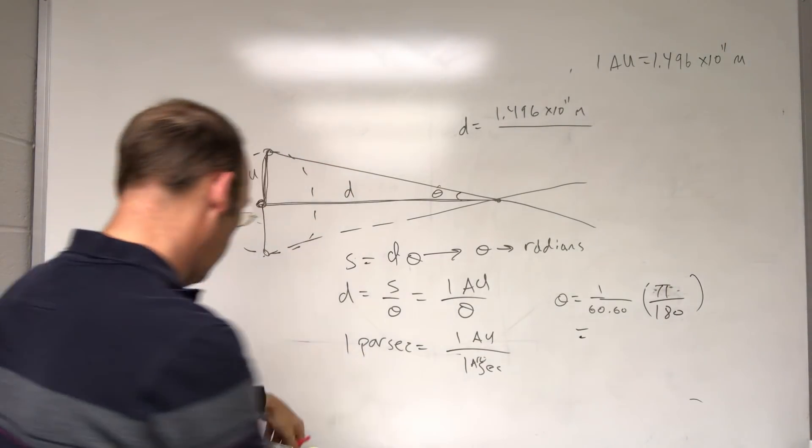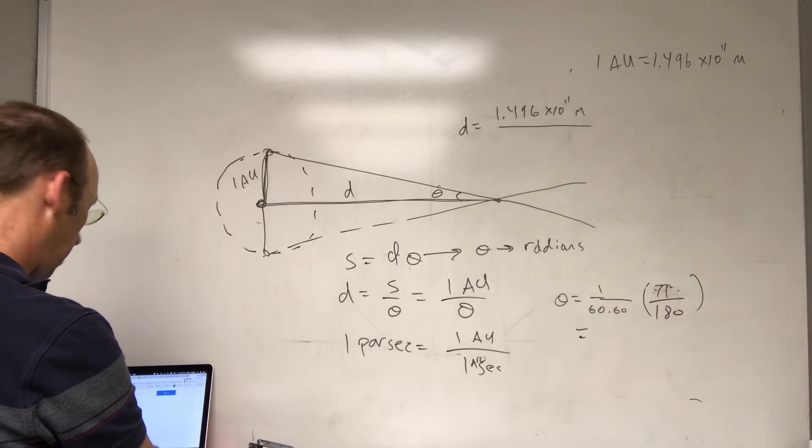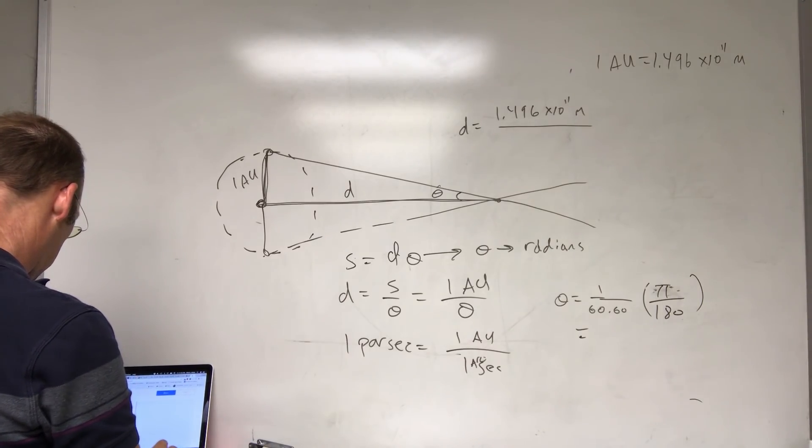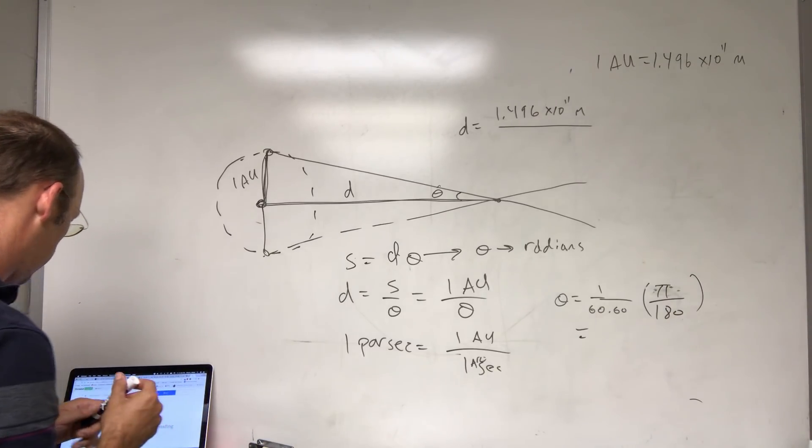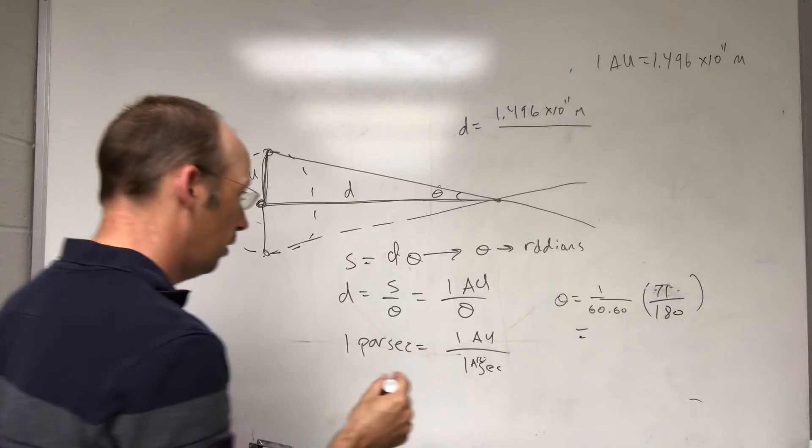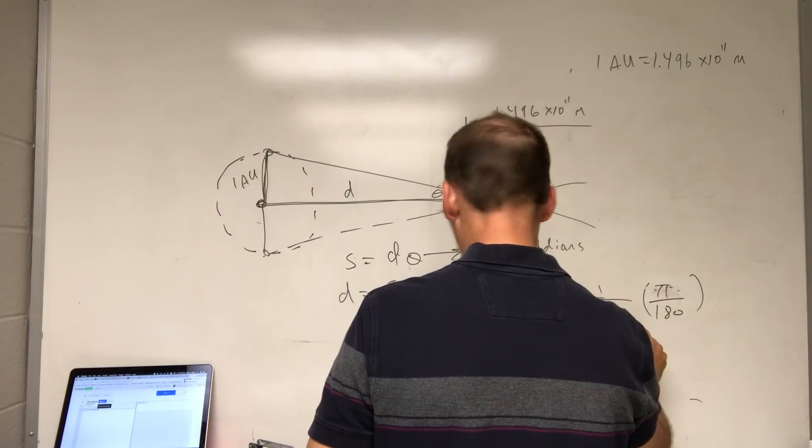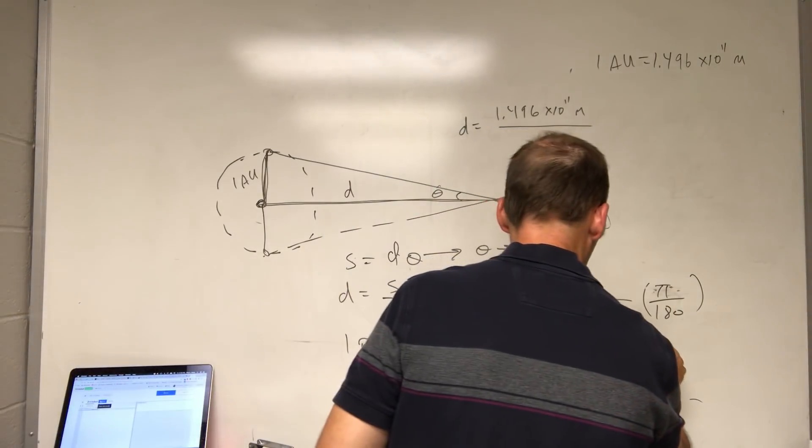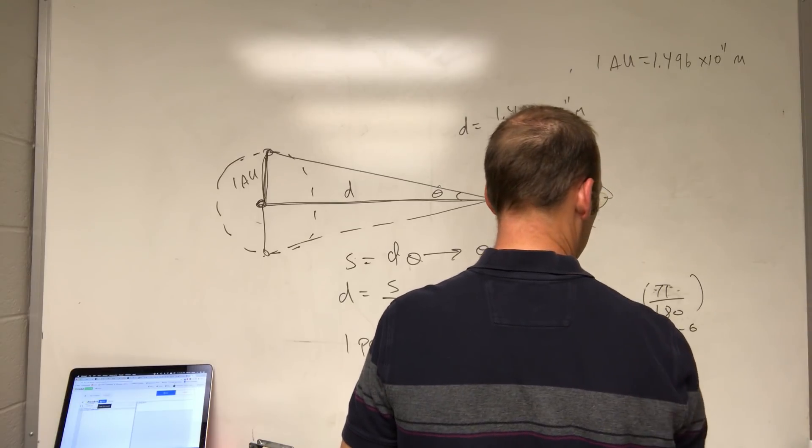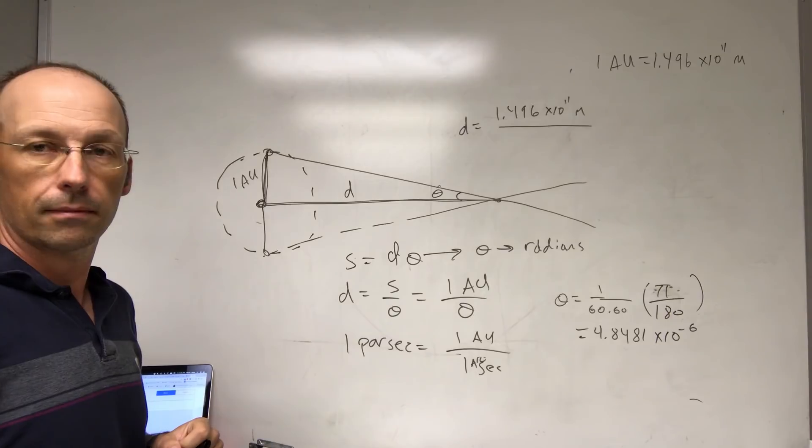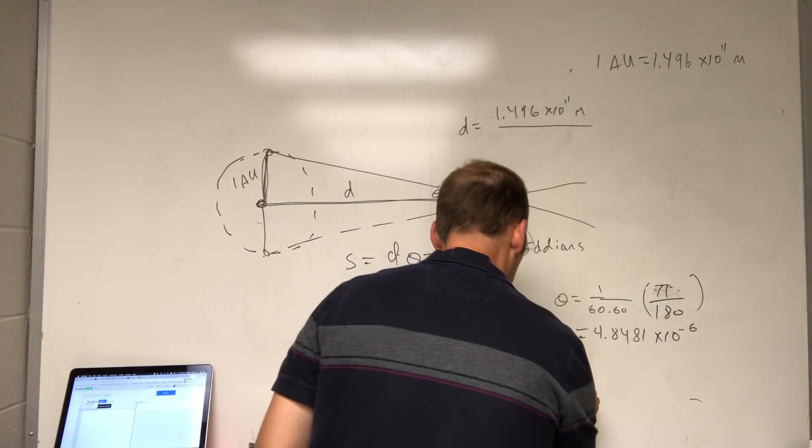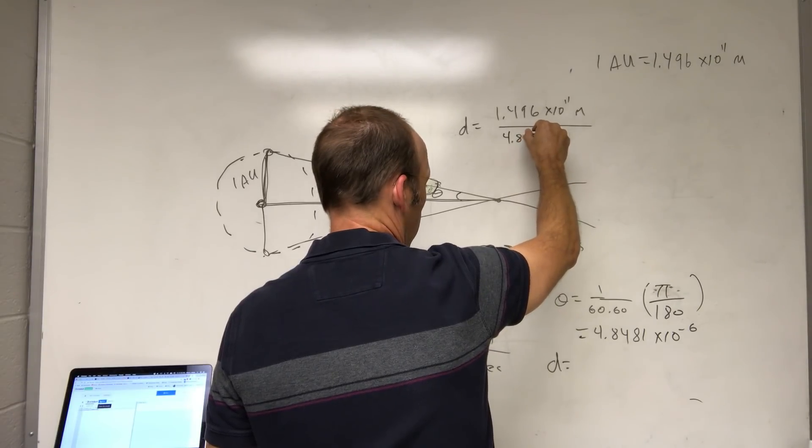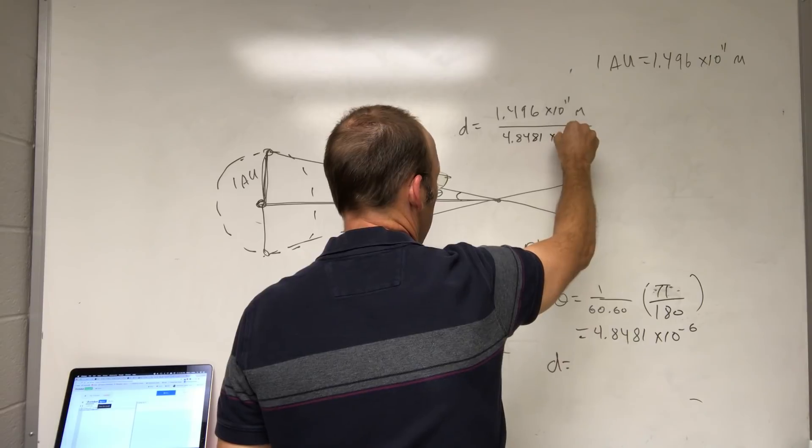Now I don't have a calculator, I have a computer. I'm going to put this in my computer just to make everyone happy. So I'm going to say pi divided by 3,600 times 180. And I get 4.848, 4.8481 times 10 to the negative sixth. That's my angle. Yeah. Now I'm going to find the distance. So the distance is going to be, oh I have it up here. So I'm going to put that angle right here and I get 4.8481 times 10 to the negative sixth.